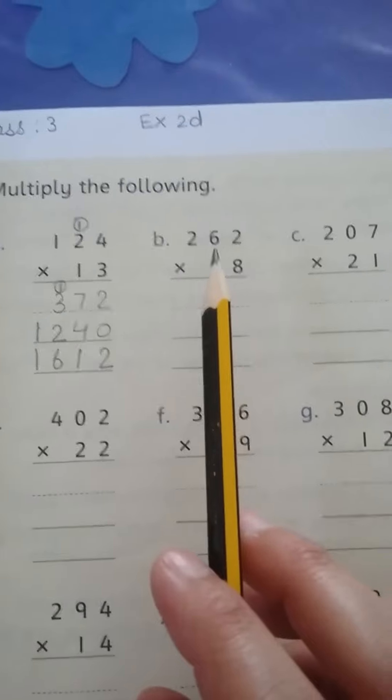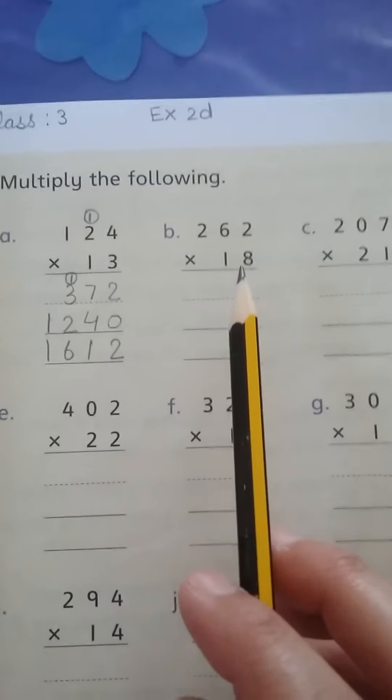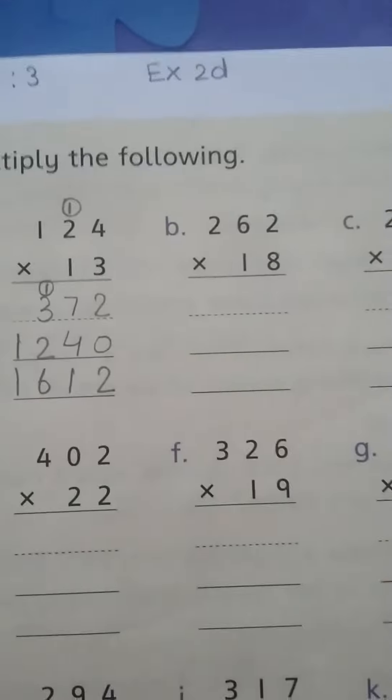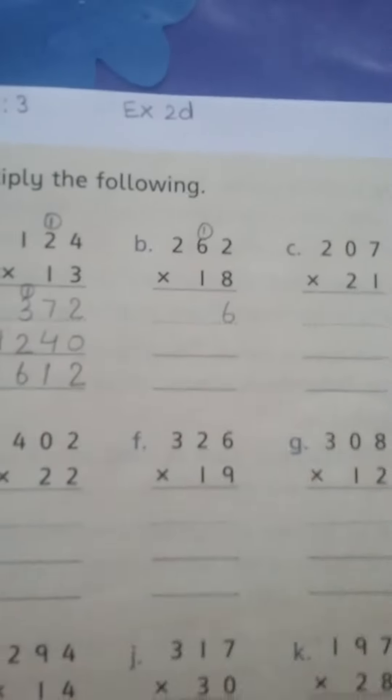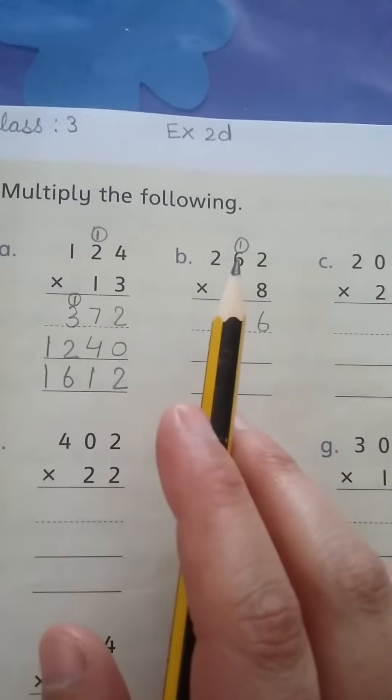This is 262 multiplied by 18. Eight twos are 16. Eight sixes are 48, plus this one is 49.